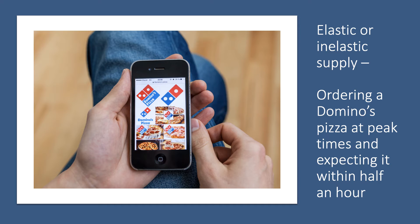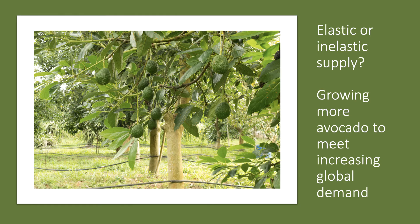What about ordering a Domino's pizza at peak times, expecting it within half an hour? At peak times, the franchisee may well be operating close to full capacity — ovens working overtime, potentially short of raw materials and ingredients. At peak times, supply can become inelastic because pizza makers are running up against capacity constraints, whereas off-peak — say at three o'clock in the afternoon — an order can arrive much more quickly.